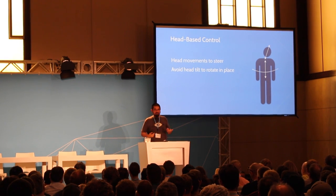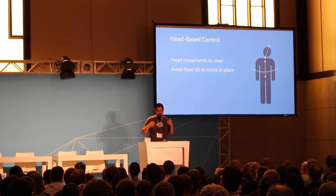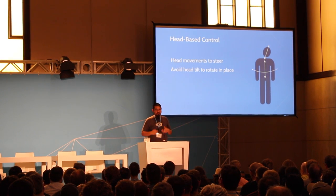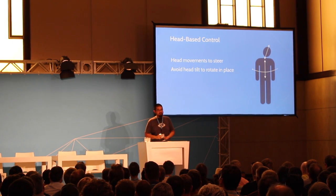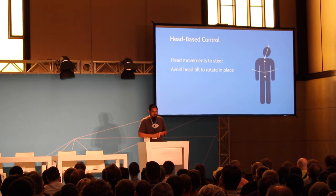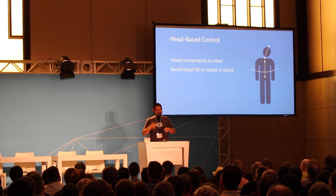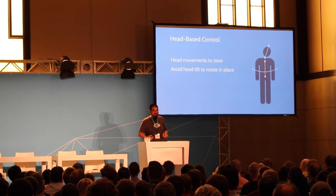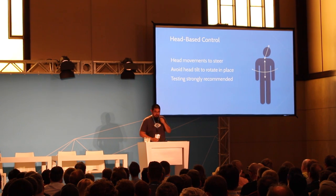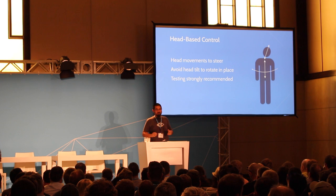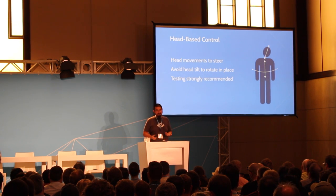Head-tilt to rotate in place sounds like a reasonable idea — using your head as a joystick to move in space — but it actually induces what's known as the Coriolis effect, or in VR the pseudo-Coriolis effect. This occurs any time your body is rotating on one axis of rotation and your head is tilted off that axis. If you've ever played Dizzy Bat — putting your forehead on a bat and spinning around — you've experienced this Coriolis effect. Little things like this are why we always recommend testing: it seems straightforward but can actually make people really uncomfortable.